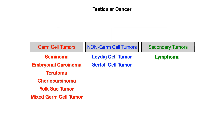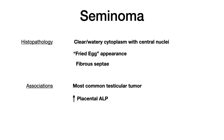We'll go through these one at a time, talking about the histopathology of each type and the high-yield associations that will show up on Step 1 or Level 1. Let's start with the seminoma. The histopathology you're going to see is clear or watery cytoplasm with a central nucleus, said to have a fried egg appearance.